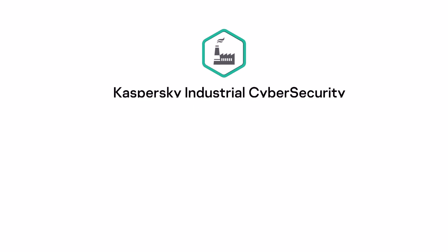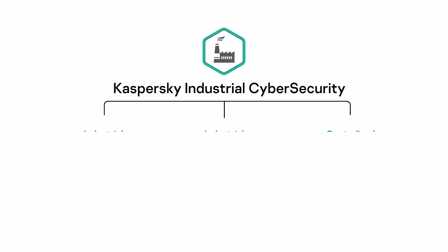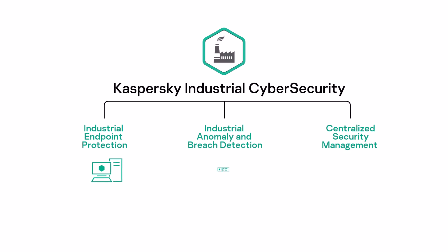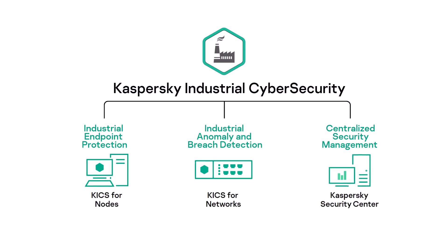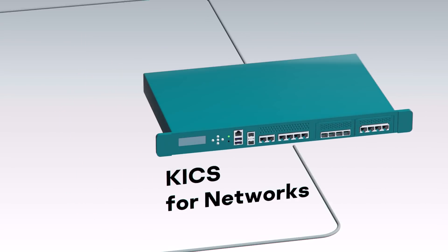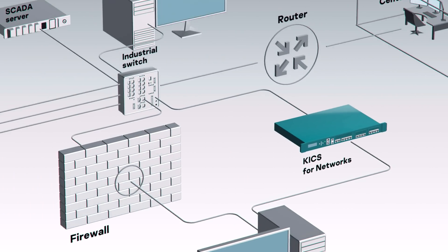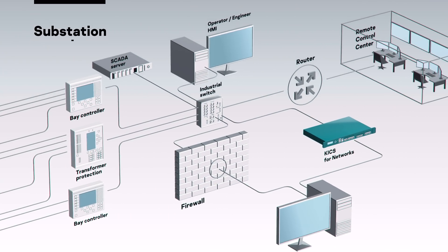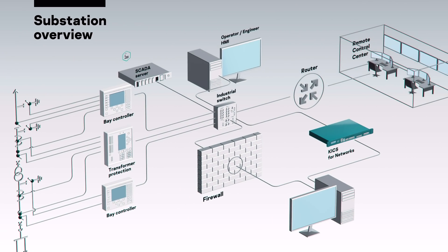Kaspersky Industrial Cybersecurity is made to control and monitor activity inside automation systems. The KICS for Nodes component is installed on workstations and servers to protect the process and equipment from cyber-attacks and human errors. The KICS for Networks component monitors the network.